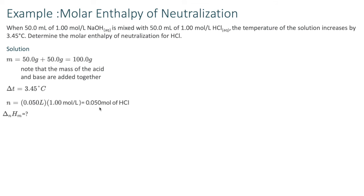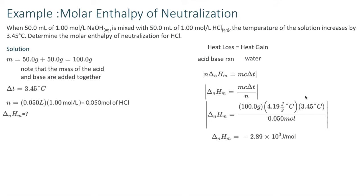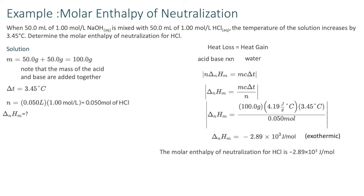We're asked for the molar enthalpy of neutralization for HCl. The water is gaining energy because the temperature is increasing — the acid-base reaction is giving off energy. Using our formula in absolute values and rearranging for the molar enthalpy of neutralization, we substitute our values and find it is negative 2.89 times 10 to the 3 joules per mole. This is exothermic because the temperature increased, so we include the negative sign. The molar enthalpy of neutralization for hydrochloric acid is negative 2.89 × 10³ J/mol.